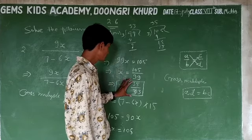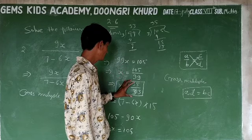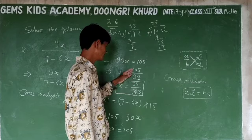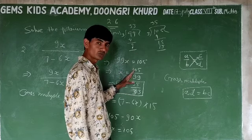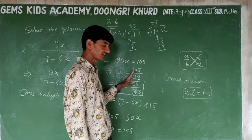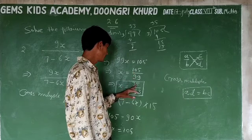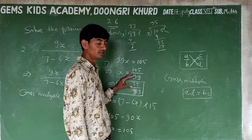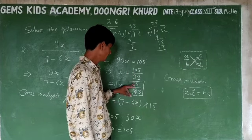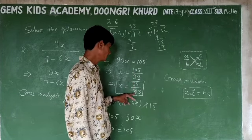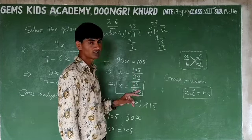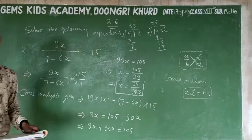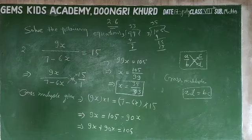If we simplify the fraction 105 upon 99 by dividing both by 3, we get 35 upon 33. So the answer is x equals 35 upon 33.